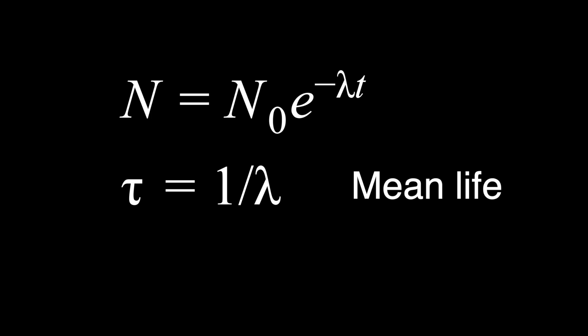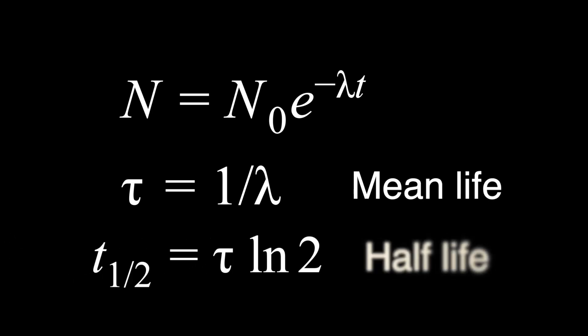The longer the mean life, the longer it takes for the element to decay. In this way, it is roughly analogous to the T60 measure in reverberation. If we normalize the mean time with a natural logarithm of two, we get the so-called half-life, which is often what is discussed in practice.